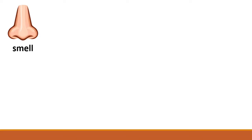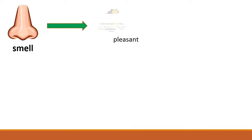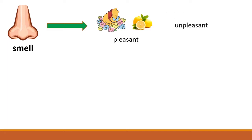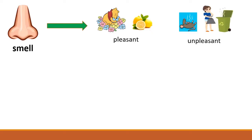Next is our sense of smell. Sense of smell can identify pleasant smell — it could be flower scent, lemon scent, orange scent, or any scent that is pleasant to our smell. Another one is unpleasant smell. It could be dead animals, rotten animals or food or plants, and even garbage odor.